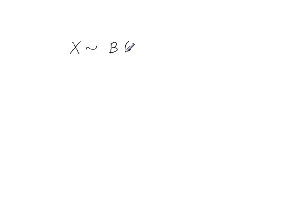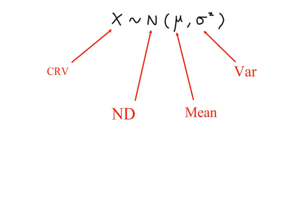You may recall from S1 when we did the binomial probability distribution that the number of successes x follows a binomial distribution, with two parameters: n, the number of trials, and p, the probability of success. We can use a similar method for summarizing a normal probability distribution.